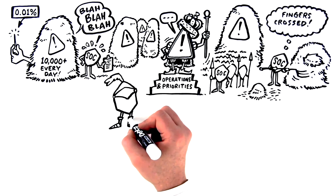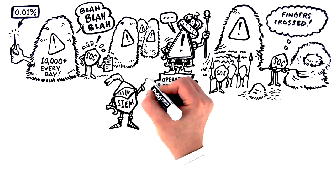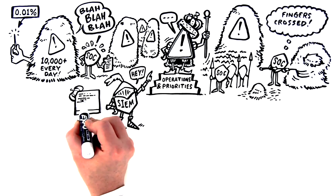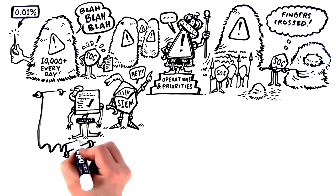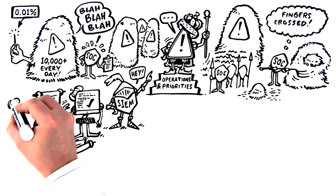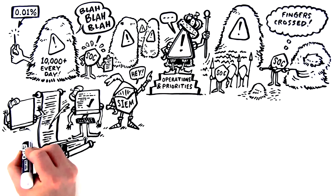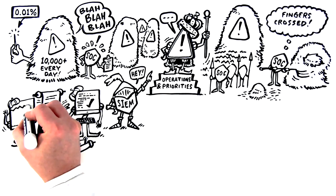SIMS and Incident Orchestration try to solve the problem of alert overload, and they do make investigating each incident quicker by automating certain pieces of simple and repetitive investigation-related tasks. But they don't decrease the number of alerts needing investigation significantly enough.